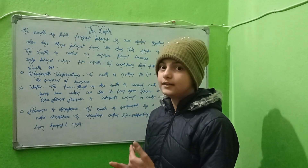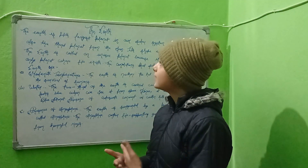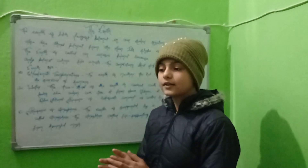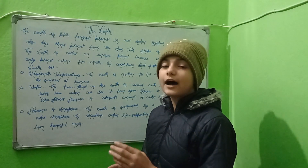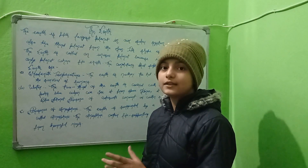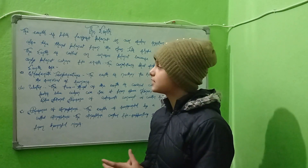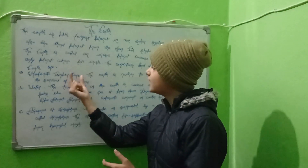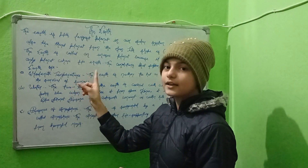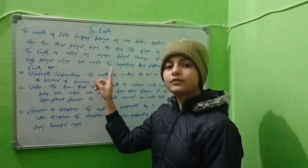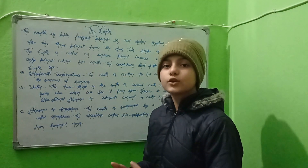From the sun, our Earth comes at the third position. If the sun is here and you count, then the first is Mercury, then Venus, and after that Earth. So Earth is at the third position from the sun.